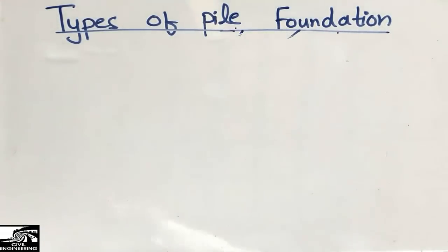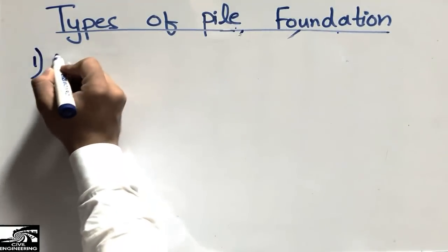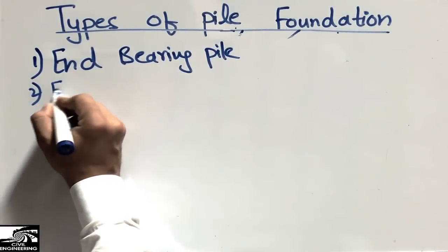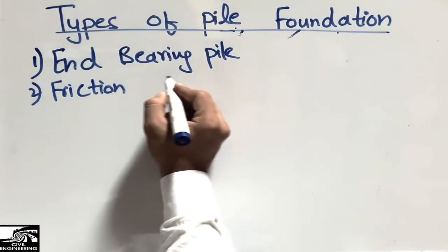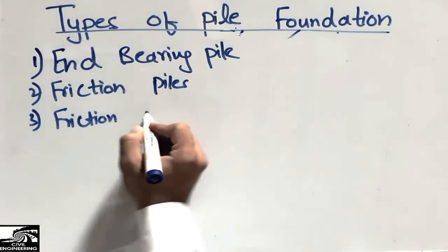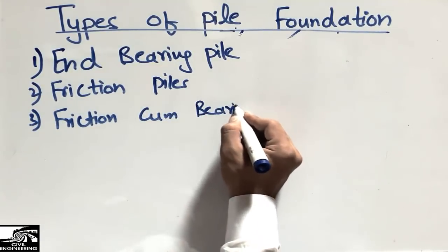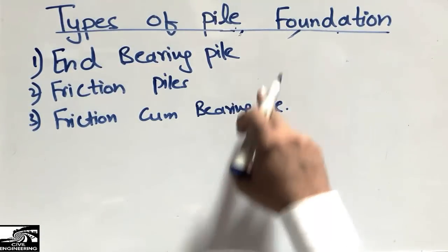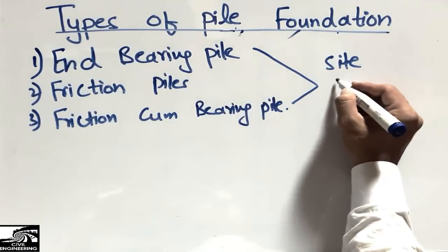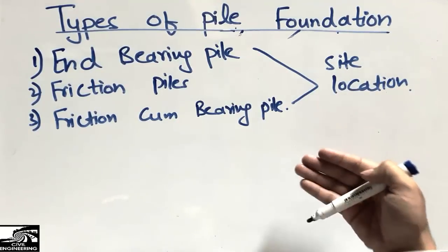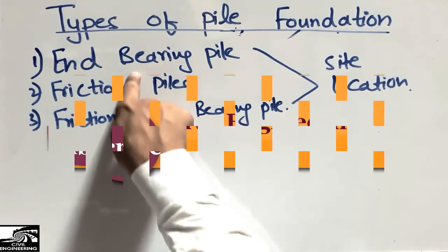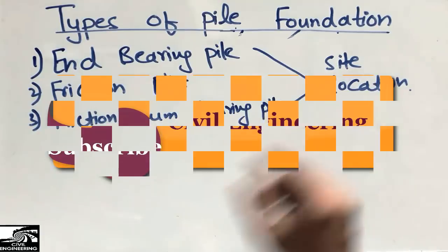There are three main types of pile. The first type is the end bearing pile. The second is the friction pile. The third is the friction-combined bearing pile. Depending on the site location — whether the foundation soil is hard or soft — engineers select from these three different types of piles.